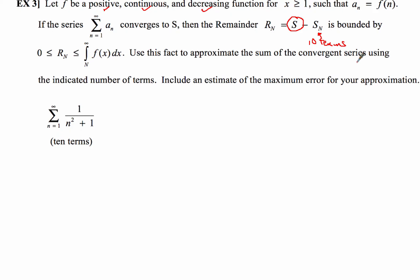The 10 terms represent the S sub n. So the remainder is going to be the difference between those two things. So it's not too confusing, but it is very symbolically heavy. So what that tells us is that it's going to be bounded by this region right here from 0 to the integral from n to infinity of f of x dx. So this piece right here, that's what's going to help us determine our error. So we're going to use that fact to approximate the sum of the convergent series using the indicated number of terms and help us come up with an estimate for the maximum error for our approximation.